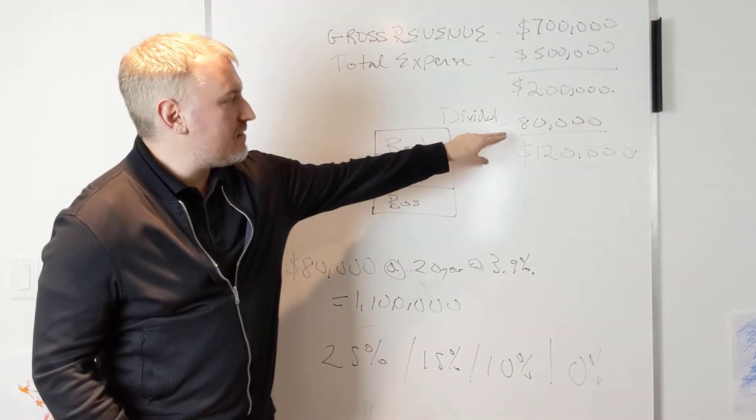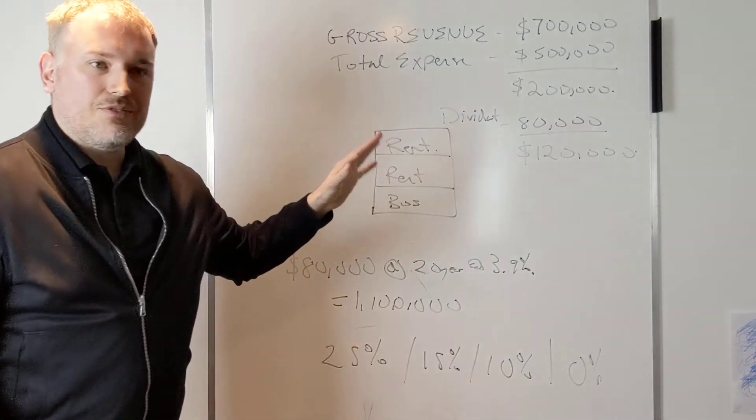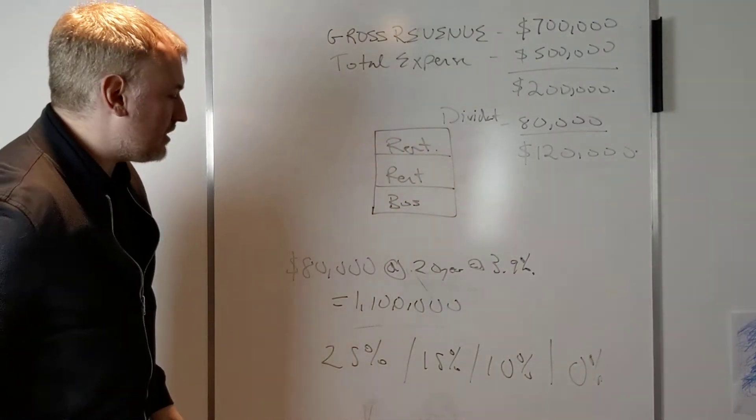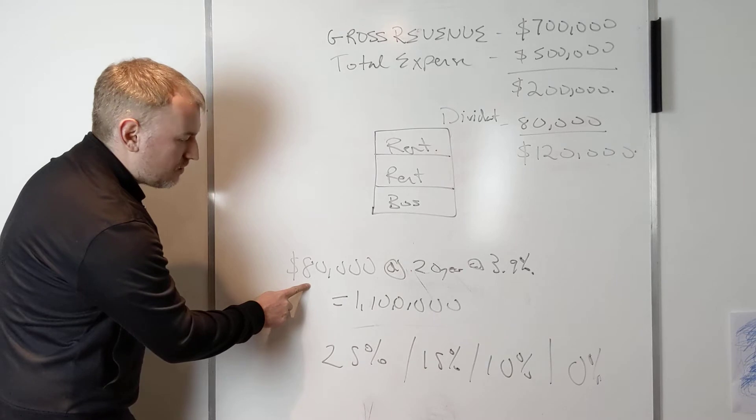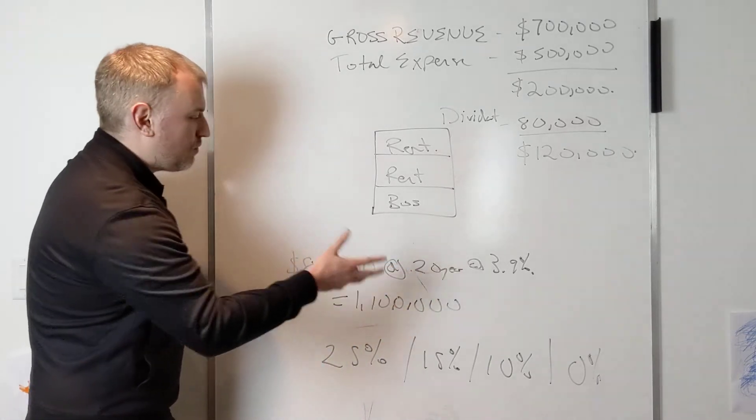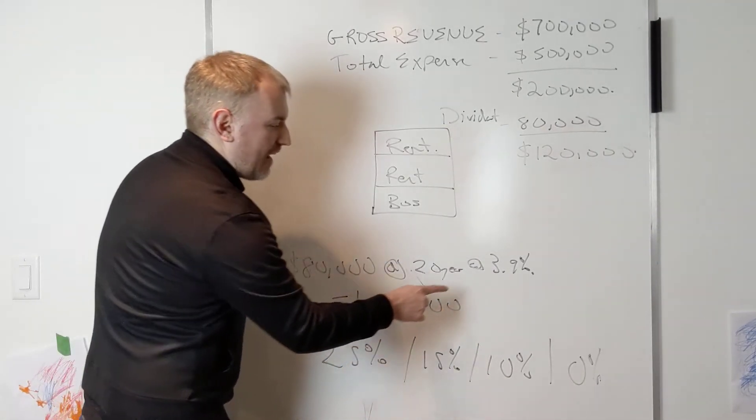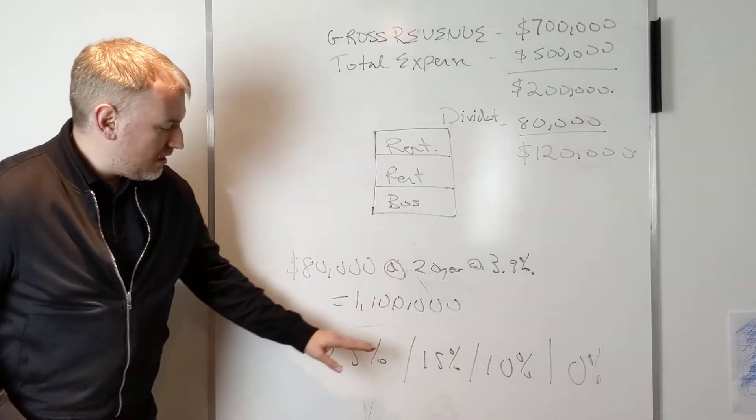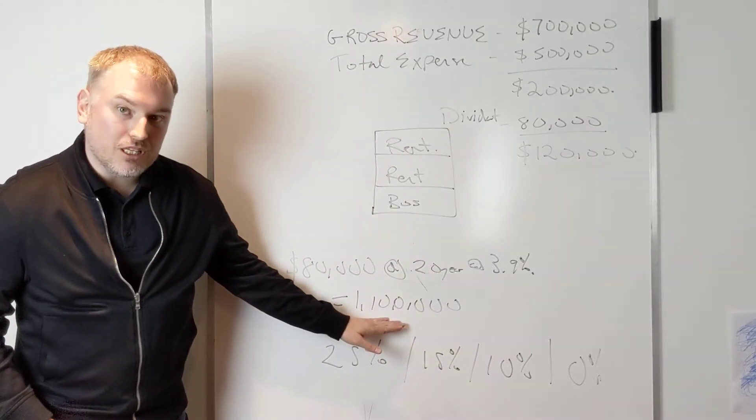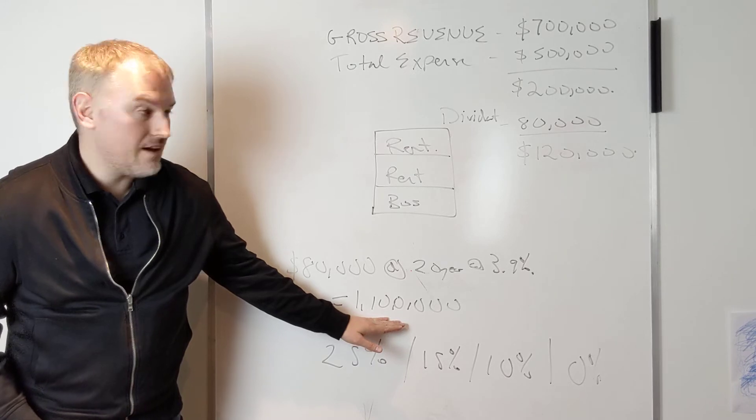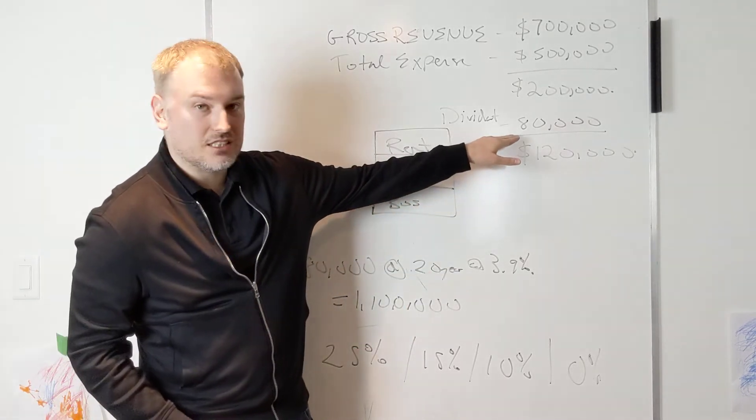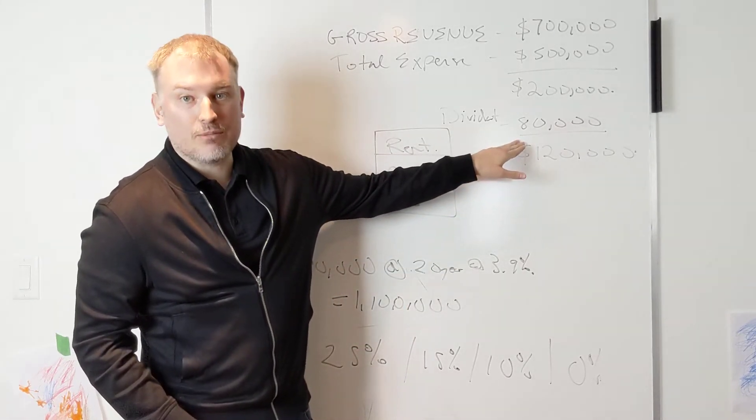So by paying out the $80,000 in dividend they save a few grand in taxes but what did they end up losing? $80,000 amortized at 20 years at 3.9%, they just lost $1.1 million worth of financing by trying to save a few thousand bucks on optimizing dividends.